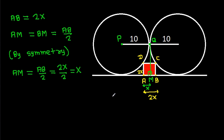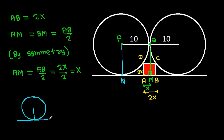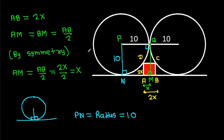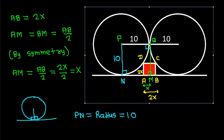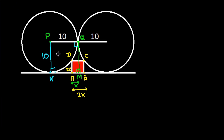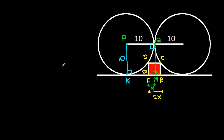So am = ab/2 = 2x/2 = x. Now suppose this point is n. If we join pn, then in any circle the radius and tangent are perpendicular to each other, so this angle is 90 degrees. And pn is the radius, that is 10.